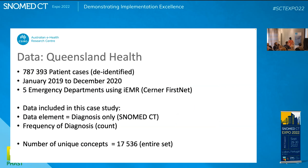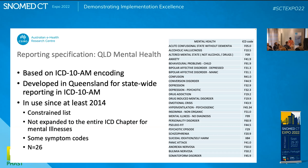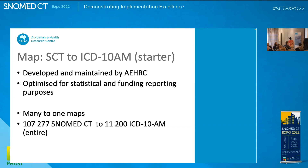I was lucky to have access to data from Queensland Health — approximately two years of data across five emergency departments from the iEMR, about 800,000 patient cases. The data we have is only the SNOMED component, which is the principal diagnosis. We also have a reporting specification used in Queensland for mental health since at least 2014, developed based on that original ICD-10AM cut-down list of about 1,300 codes — it includes only about 26 codes and doesn't include the entire mental health chapter. We also have a map we've developed and maintained, optimised for statistical and funding reporting purposes, mapping approximately 110,000 SNOMED codes.